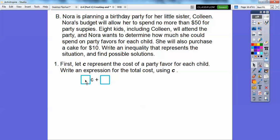This box with C right here means something times C. Well, this something is going to be, it says something about eight kids, including Colleen, right here. Eight kids. So this is going to be 8 right here. Now we're going to have to add in that the cake that we purchased right here. So we're going to have to add in that $10 right there.